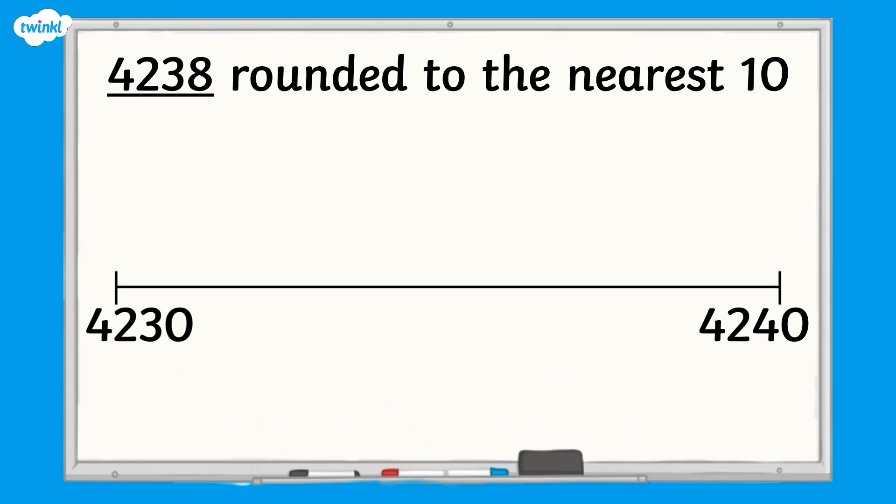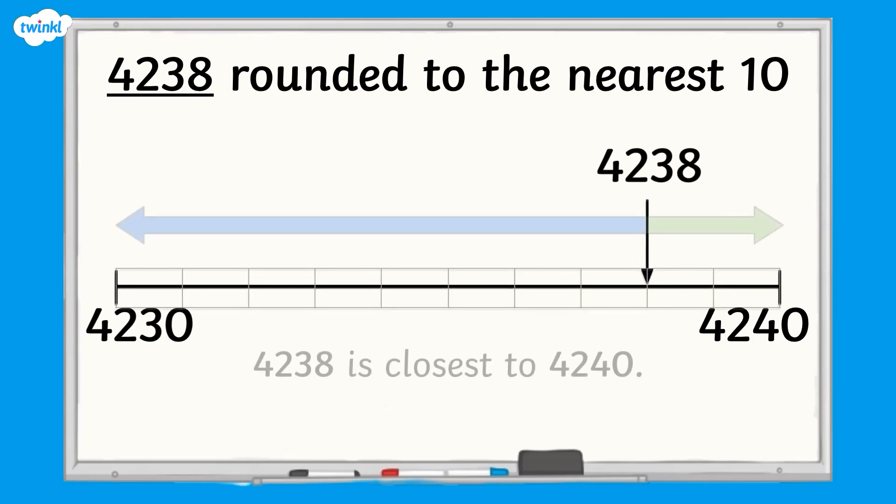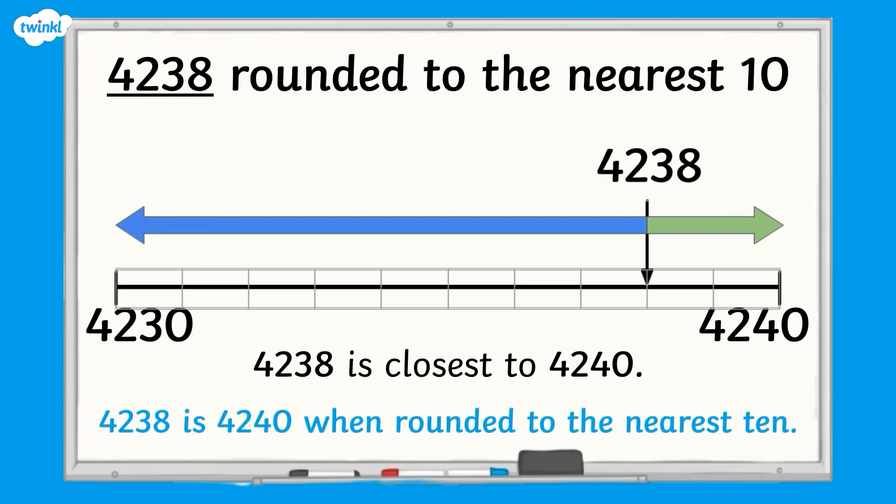Then we place 4238 in the correct place on the number line. We can see that 4238 is closest to 4240. Therefore, 4238 is 4240 when rounded to the nearest 10.